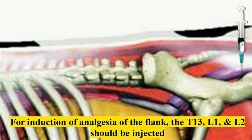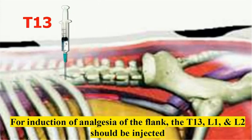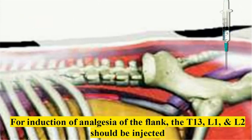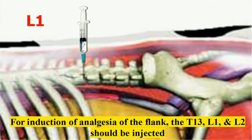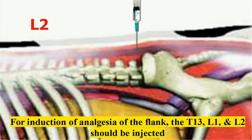The last thoracic, or T13, can be located directly caudal to the head of the last rib, 5 cm lateral to the midline, and at a depth of 5 cm. While L1 and L2 can be located caudal to the transverse processes corresponding to the nerves at the same depth, 5 cm lateral to the midline.